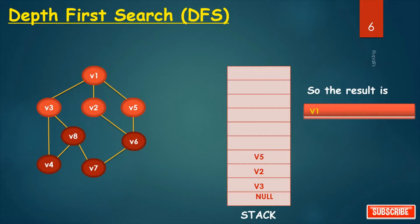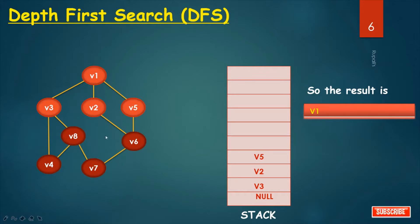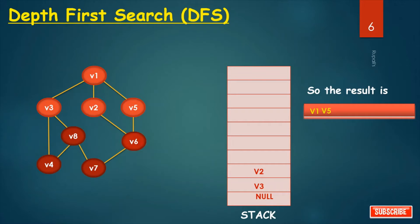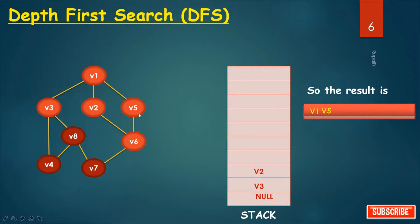Push these nodes since all have status 1. Now it is time to pop. Pop V5 and print V5. The connected nodes of V5 are V1 and V6. V1 is already in status 3, so I can't push it. V6 is in status 1, so I can push V6 into the stack.